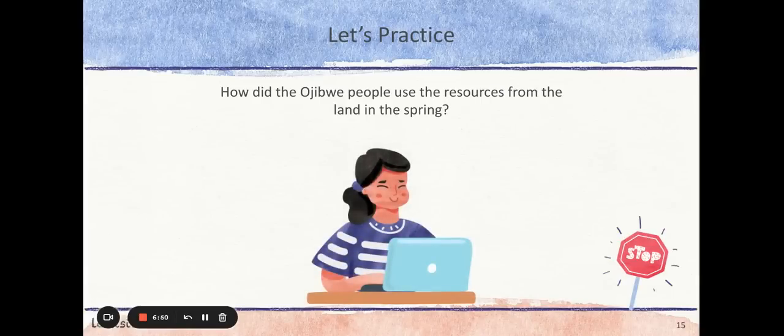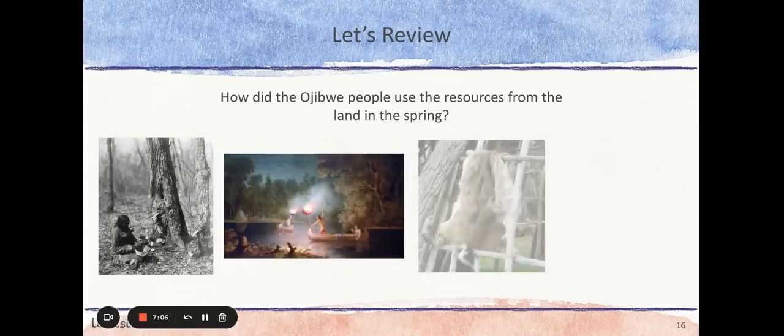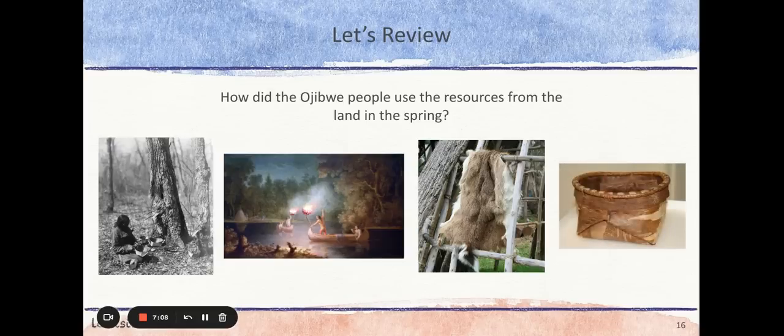Now you are ready to think about how the Ojibwe people met their needs during the springtime. Pause this video to record your answers on your handout at stop sign number four, then hit play when you are ready to continue. Some possible responses are the Ojibwe used the land to harvest maple syrup, create materials using birch bark, hunted, trapped, and fished during the spring time.